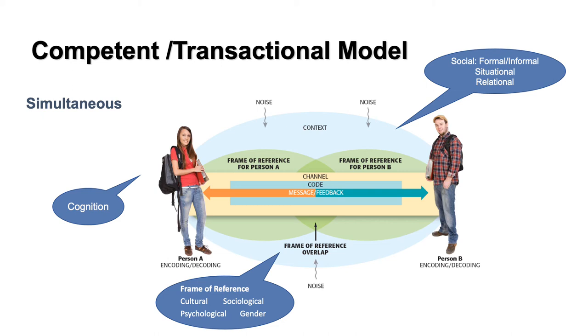And so everybody has one and that's represented by these green ovals here in the middle of the model. And you'll notice that each person has one and then there's some overlap in the center.